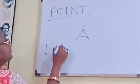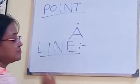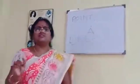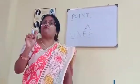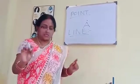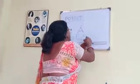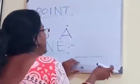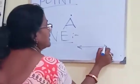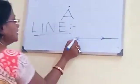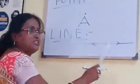Now, line. Line is a straight path or collection of points that goes endlessly in both directions. It is a line. It can go endlessly in both directions. That is why it has no fixed length.